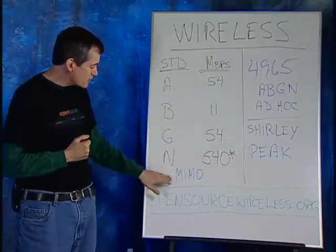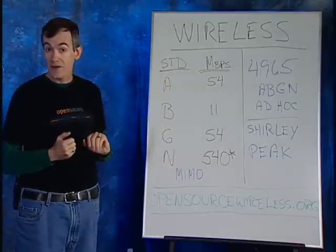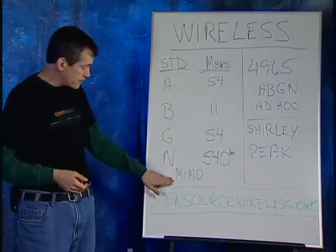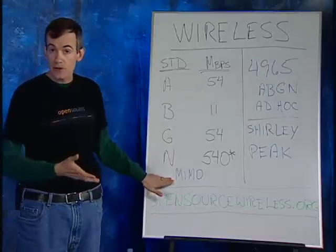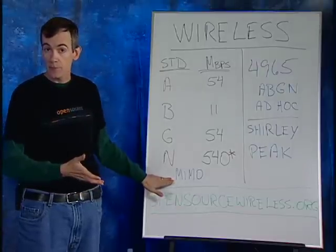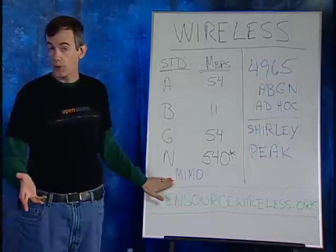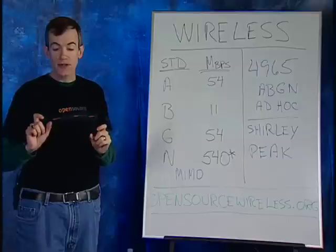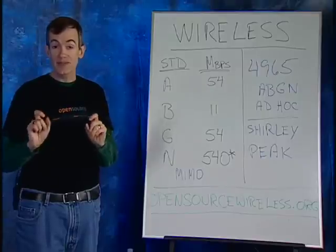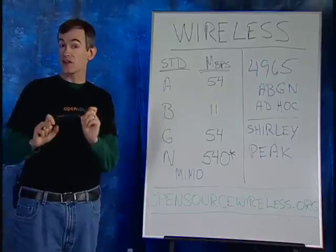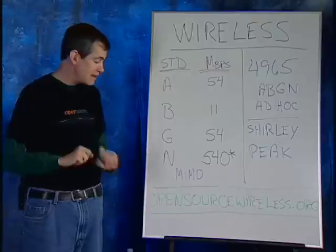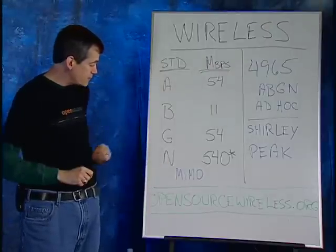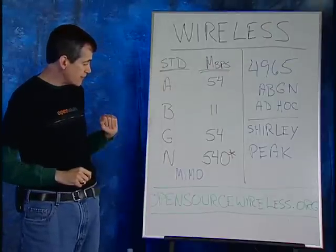The other feature of 802.11N is what's called MIMO — multiple input, multiple output. It actually has different frequency channels that it can talk on simultaneously, and that's a great feature for 802.11N.